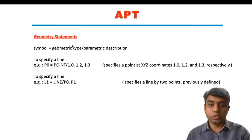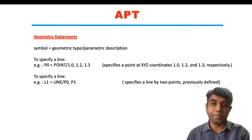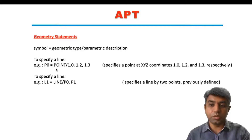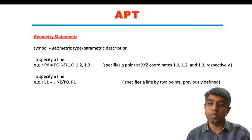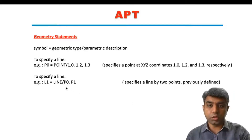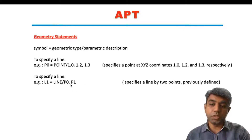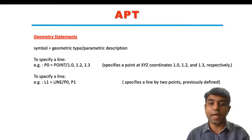Geometry statements describe the geometry of the particular part. For example, you can name a point as P0, then indicate that P0 is a point — after a slash, you indicate the x, y, and z coordinates. Say x is 1.0, y is 1.2, and z is 1.3, so you write: P0 = POINT / 1.0, 1.2, 1.3. If you want to indicate a line named L1, you write: L1 = LINE passing through point P0 and P1, where P0 and P1 are pre-defined in the program.